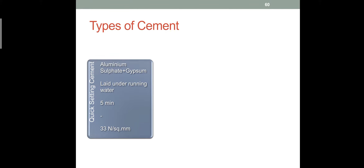The next type is quick setting cement. As the name indicates, it sets very quickly. When we go for underwater concreting — in the sea or in a river — very quick setting cement is needed. For this, gypsum should be adjusted in the normal cement.